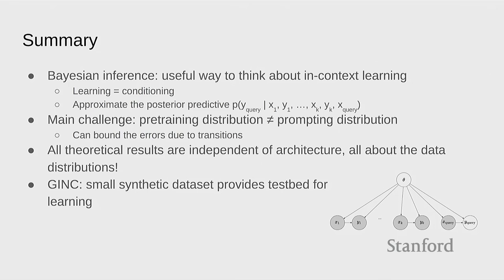One important note is that all these results in the second part of the talk are independent of the architecture. Understanding in-context learning through this lens is all about understanding the differences between the pre-training distribution and the prompting distribution — which you have analytically. There's no sample complexity; it's just about these two distributions. This might be useful for understanding the role of data — if you think about solving tasks with web corpora, maybe there's a way to use this framework to understand data distributions and their relationships.